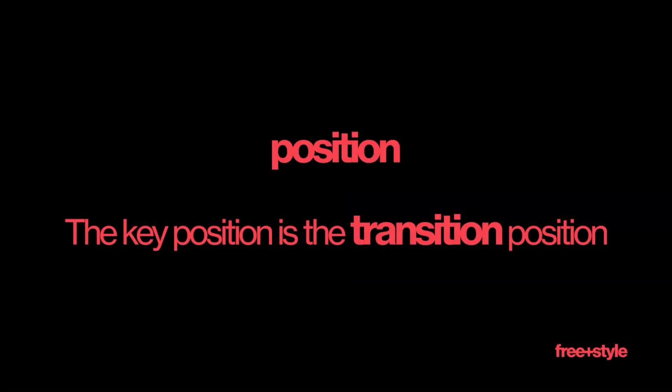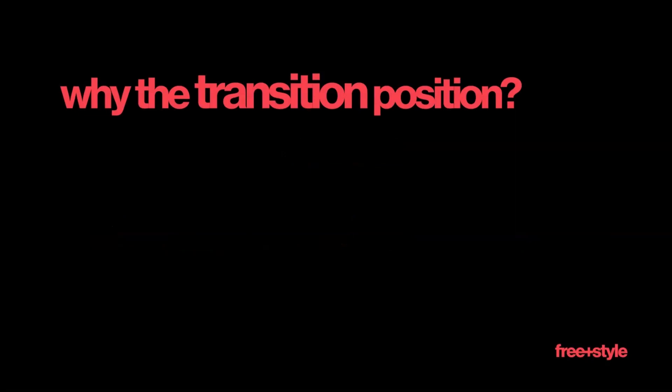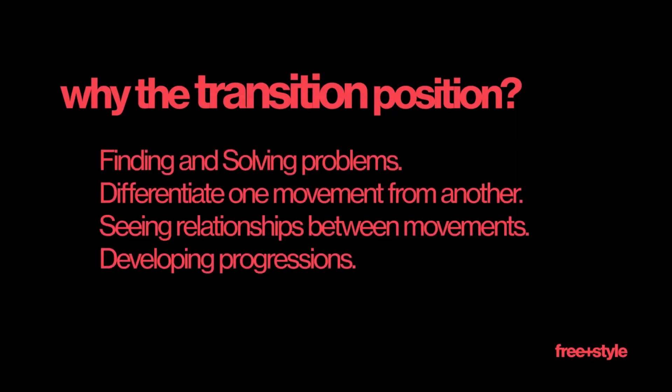The key position out of the three — start, transition, and finish — is the transition position, because it allows us to see four different aspects of movement: first, the place where we find and solve problems; second, where we differentiate one movement from another; third, seeing relationships and similarities between movements; and fourth, developing progressions. All of these aspects tie into one another.